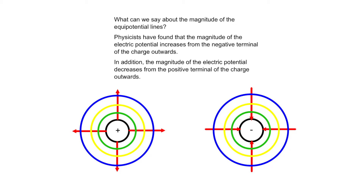But what can we say about the magnitude of the equipotential lines? Physicists have found that the magnitude of the electric potential increases from the negative terminal of the charge outwards. Therefore, the green line has a lower potential than the yellow line, and the yellow line has a lower potential than the blue line.